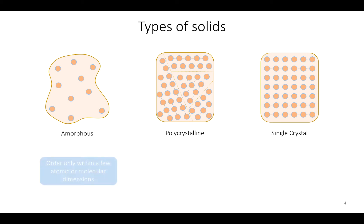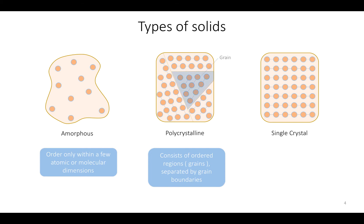Amorphous materials have order only within a few atomic or molecular dimensions, while polycrystalline materials have a high degree of order over many atomic or molecular dimensions. These ordered regions in polycrystalline materials vary in size and orientation with respect to one another. These ordered regions are called grains and are separated from one another by grain boundaries. The problem with polycrystalline materials is that grain boundaries tend to degrade electrical characteristics when passing from one grain to another.